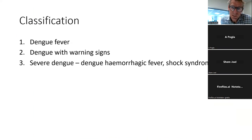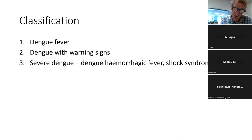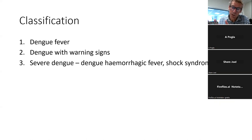The classification of dengue is now in three parts: dengue fever, dengue with warning signs or emergency signs, and severe dengue — either dengue hemorrhagic fever or dengue shock syndrome. There have been several different classifications over the years, but it's really a spectrum from just a febrile illness to severe dengue with shock or coagulopathy.